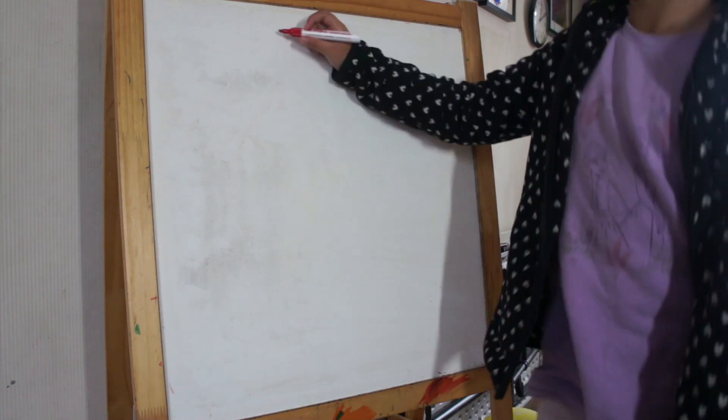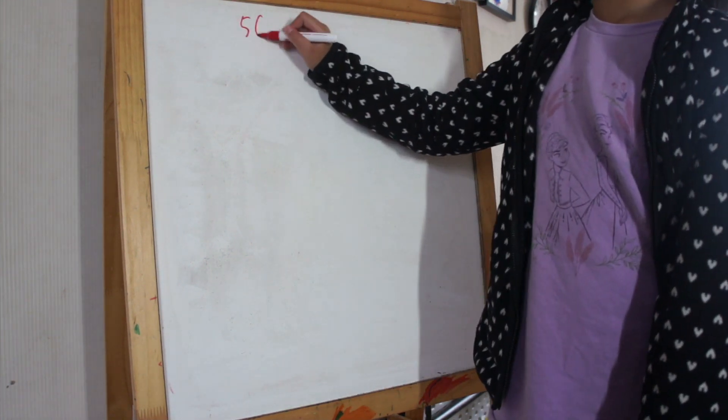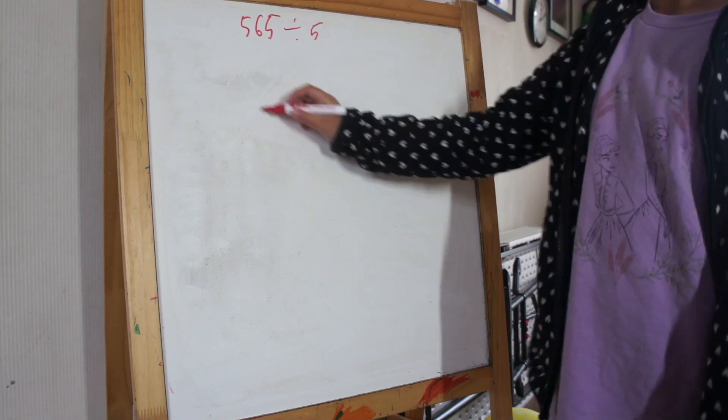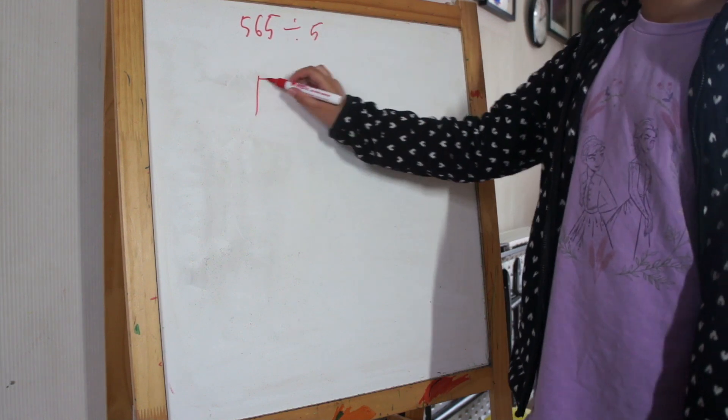Hello, my Water Lemons. Today I will be teaching you long division. For example, we have 565 divided by 5. In long division, it will look like this.